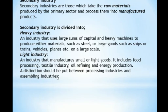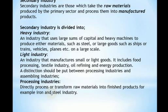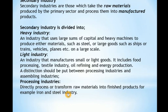Within secondary industries, we distinguish between processing industries and assembling industries. Processing industries directly process or transform raw materials into finished products. For example, the iron and steel industry uses iron ore — obtained from the primary sector through mining — and transforms it into iron and steel products such as iron sheets or metallic bars.